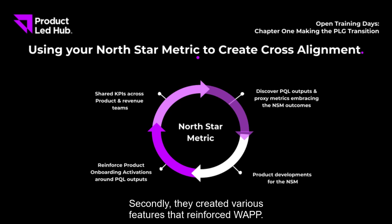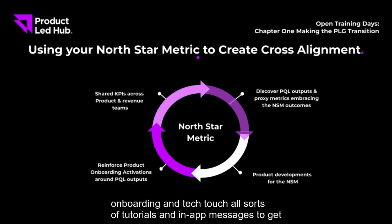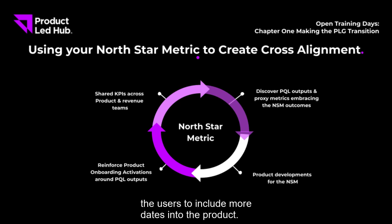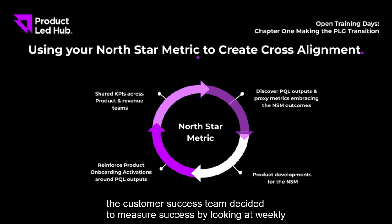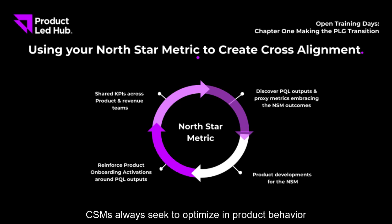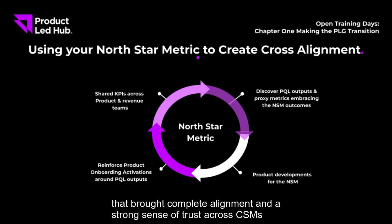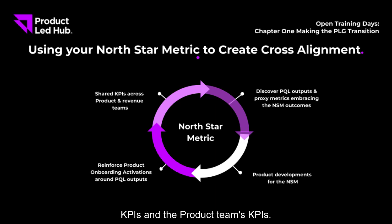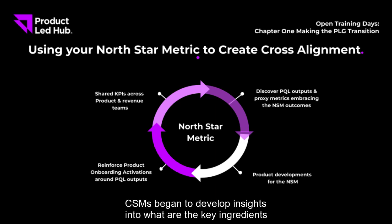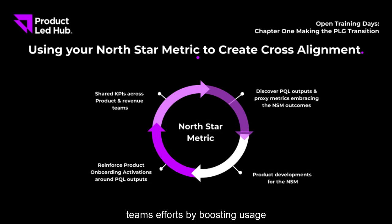They created features that enforce WAU and injected tutorials and in-app messages into onboarding to get users to include more dates in the product. Following the same logic, the customer success team measured success by looking at weekly active users per account. As a result, CSMs began optimizing product behavior toward increasing weekly usage, which brought complete alignment between CSM KPIs and the product team's KPIs.